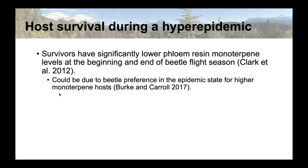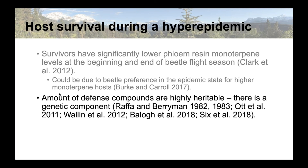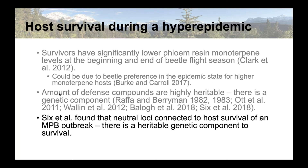We know that survivors have significantly lower resin flow and defense chemicals at the beginning and end of flight season, and there are reasons related to beetle behavior. The amount of defense compounds is heritable and has a genetic component in trees that have survived versus succumbed to mountain pine beetle attack. Through study of neutral loci, there's also a connection genetically to host survival of an outbreak. But we haven't really pinpointed, beyond terpenoids and some defense compounds, what the underlying genomics of these compounds is.